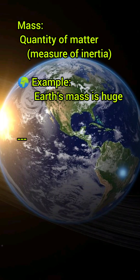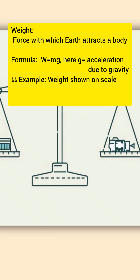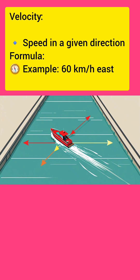Mass is a measure of inertia and it is a quantity of matter — the best example is our earth, whose mass is very huge. Weight is a force with which earth attracts a body, and the formula is W equal to mg.